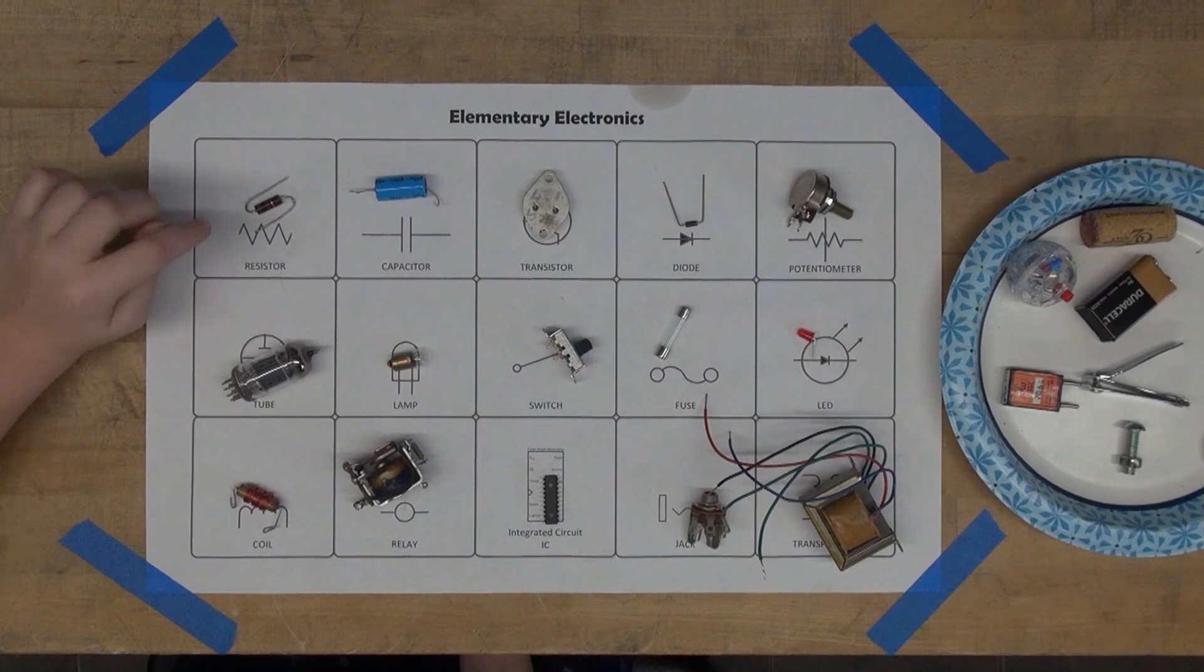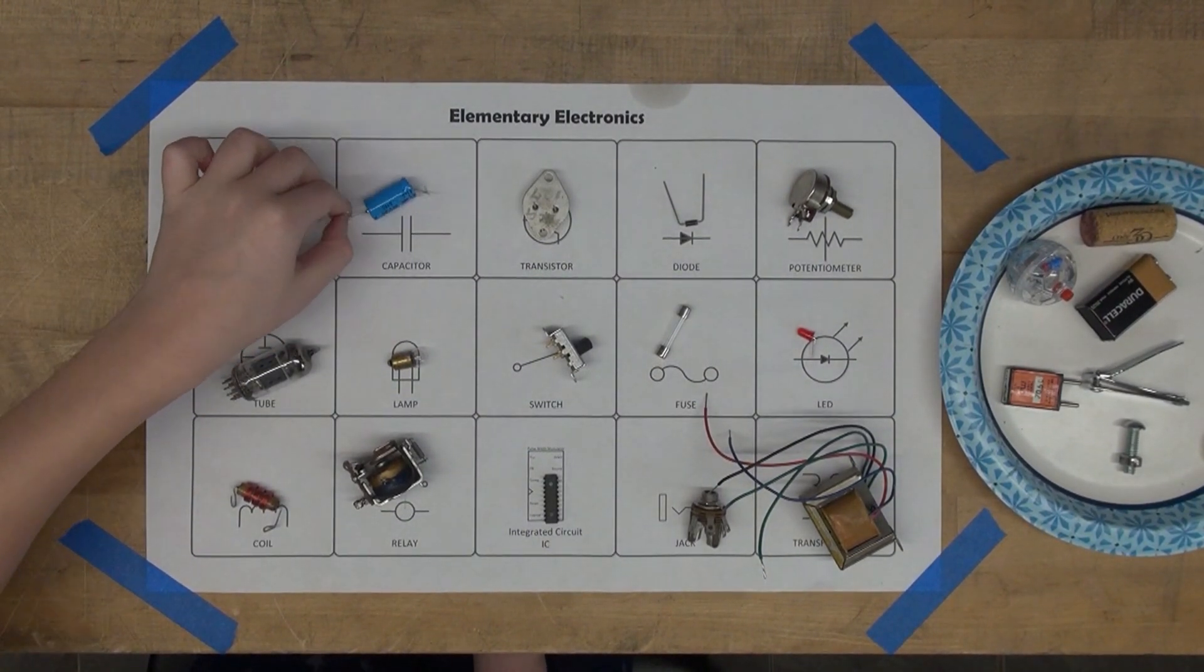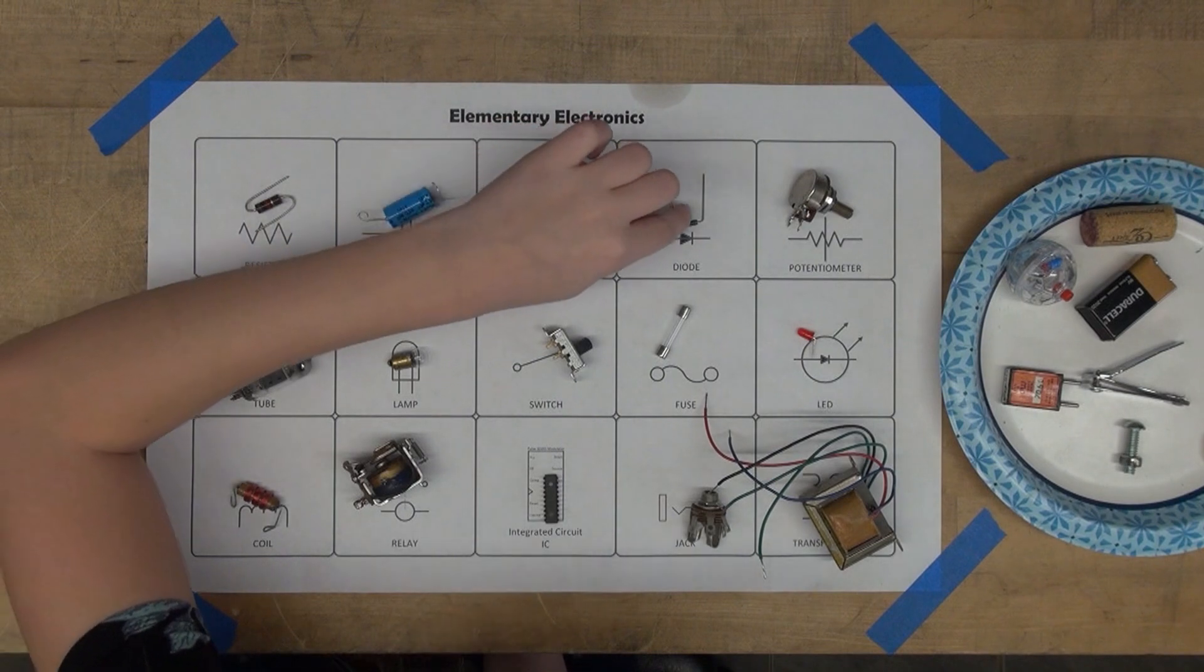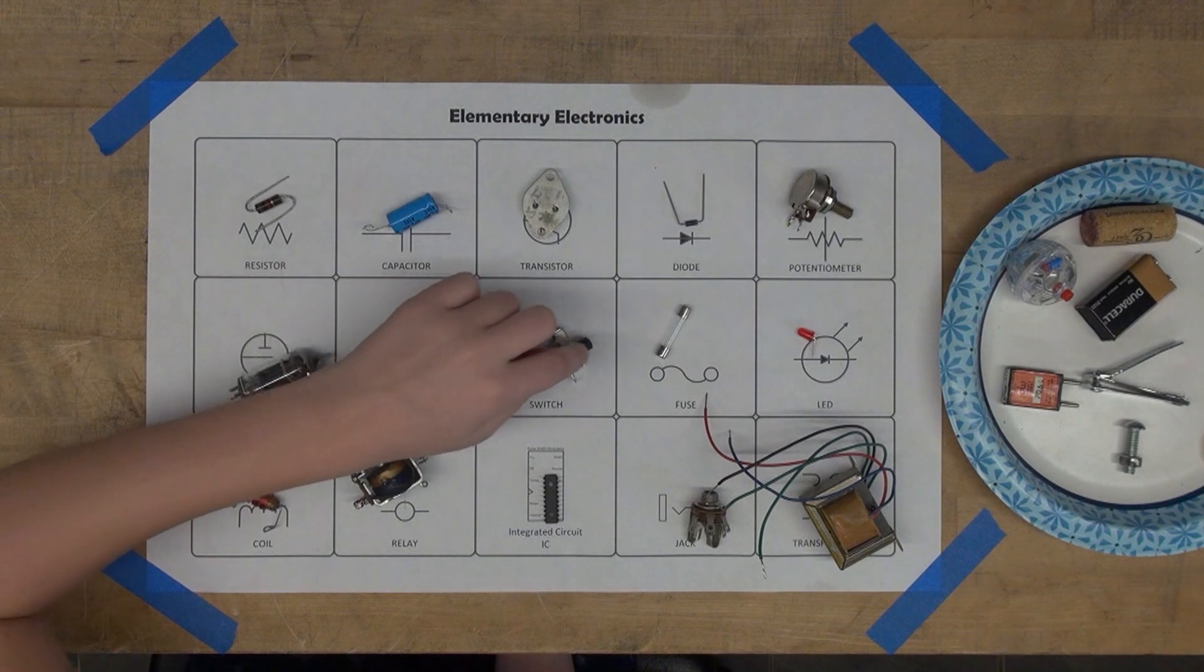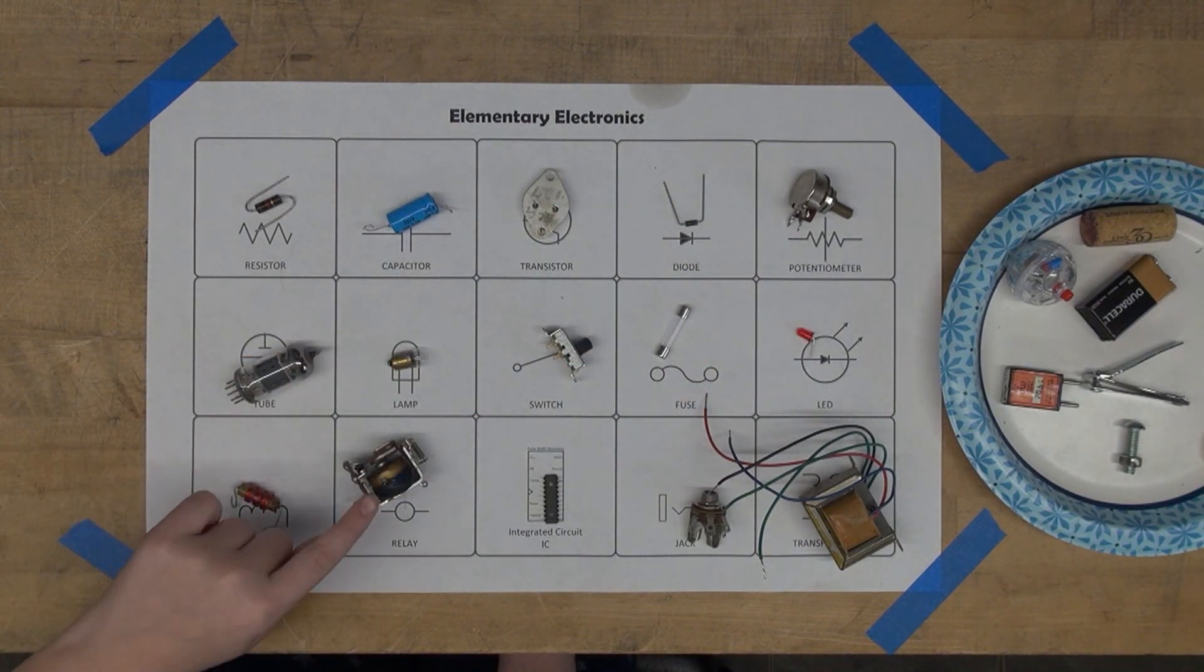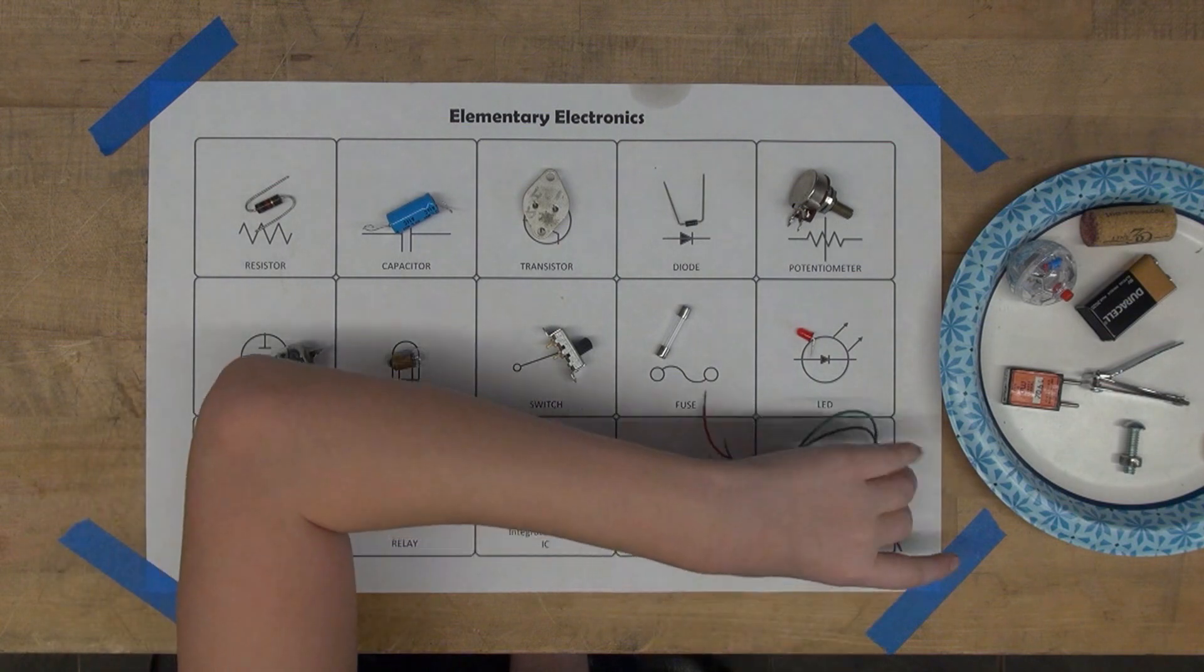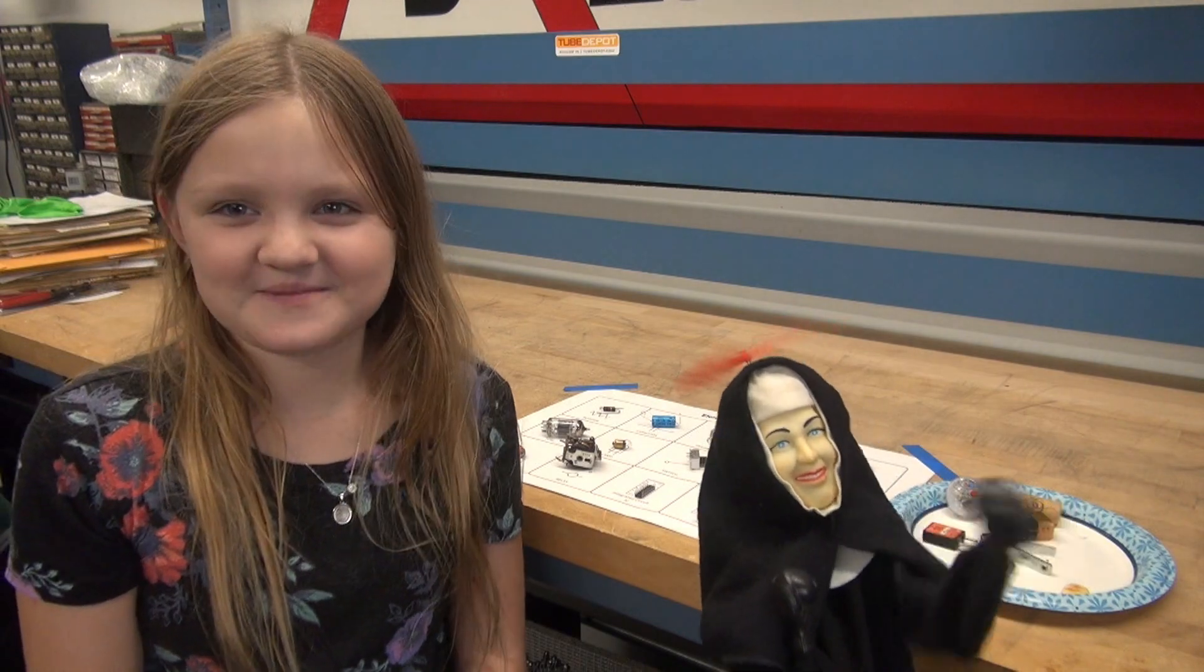So here are the names. This is a resistor. This is a capacitor. I call them capacitators. I learned it from my grandpa. This is a transistor. This is a diode. This is a potentiometer. This is a tube. This is a lamp. This is a switch. This is a fuse. This is an LED. This is a coil. This is a relay. This is an integrated circuit IC. This is a jack. And this is a transformer. Got it right with a little insight from Attila. See you next time. Bye-bye.